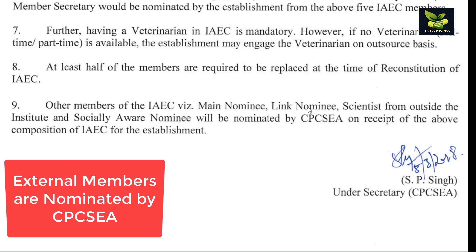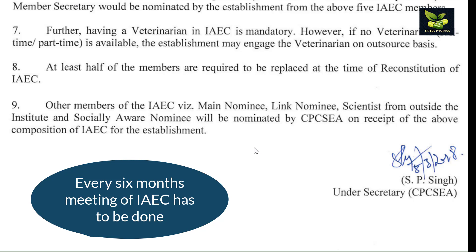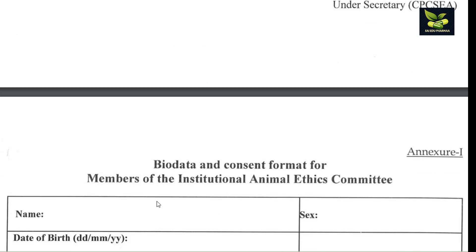The names of other members will be given by CPCSEA, including a Main Nominee, a Link Nominee, a scientist from outside the institute, and a Socially Aware Nominee — these will be appointed by CPCSEA upon receipt of the above composition of IAC from the establishment. The Main Nominee is the primary signing authority; in their absence, the Link Nominee takes over. Even if the Main Nominee attends all meetings, the Link Nominee must be invited at least once a year. Every six months an IAC meeting must be conducted, but if there are more than 40 proposals in a year, meetings can be held every three months.